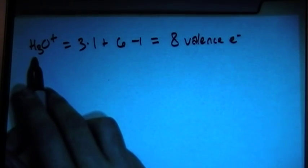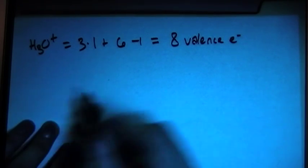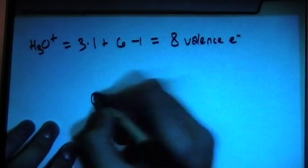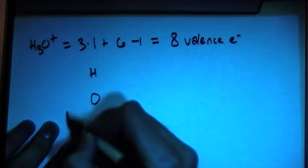We know that hydrogen cannot be a central atom because it can only bond once. So in this case, the oxygen has to be the central atom. So we can go ahead and put the oxygen here, and there's three hydrogens, so H, H, H.